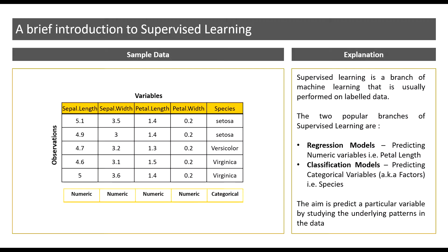Now remember the IRIS dataset? For those of you who are not familiar with the IRIS dataset, click on the link below this video to find out more. Supervised learning is a branch of machine learning that is usually performed on labeled data. What do we mean by labeled data? Here, the species column is what we mean by labels — that is, every row, every observation, has a label.